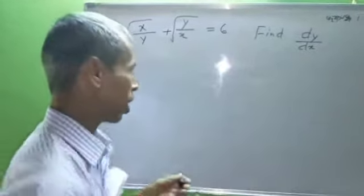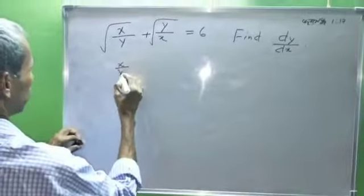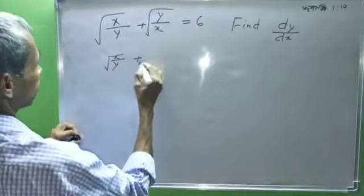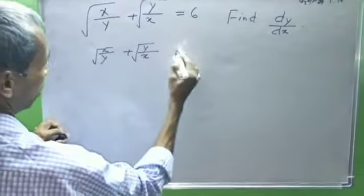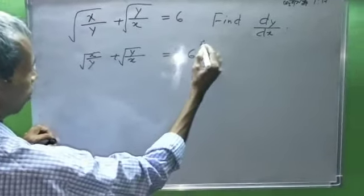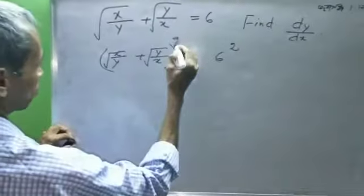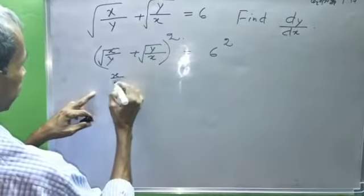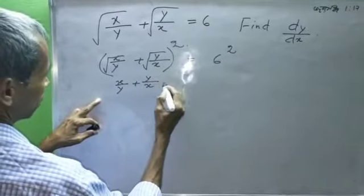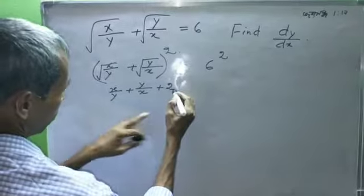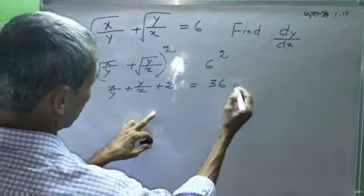Om Paddan Abhayanam. X by Y root of R plus Y by X root of R equals 6 squared. X by Y plus Y by X plus 2 equals 36.